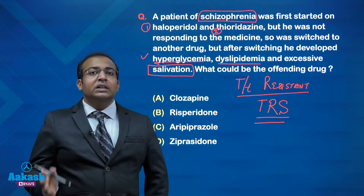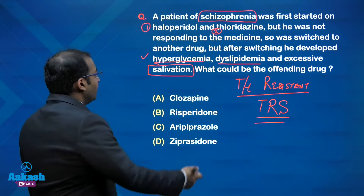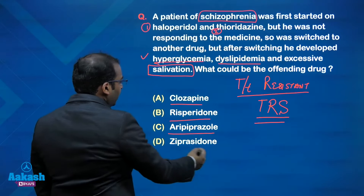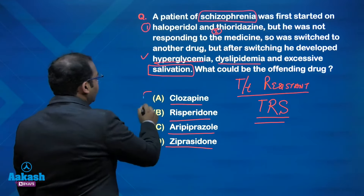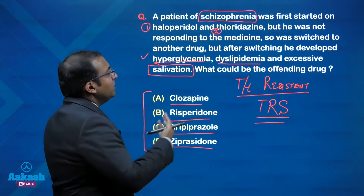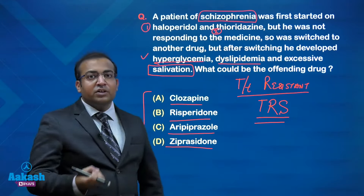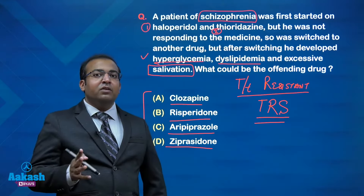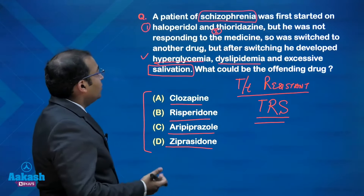The question asks you to identify the offending drug from four options: clozapine, risperidone, aripiprazole, and ziprasidone. All four options are antipsychotics, so simply reading through them will not give you the answer. What the examiner expects you to know is the adverse effect profile — one drug among these four is the offending drug that accounts for all of these adverse outcomes.